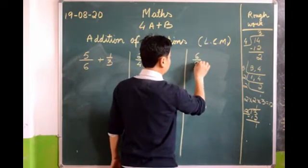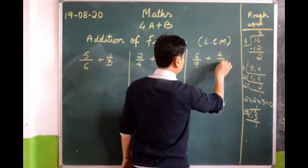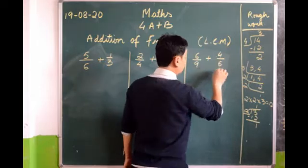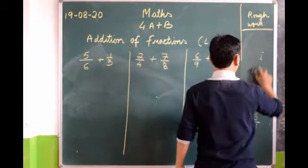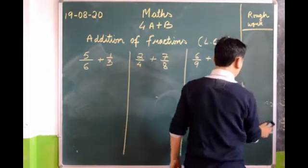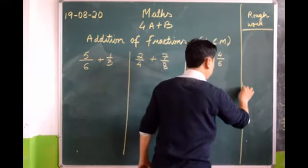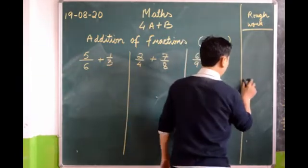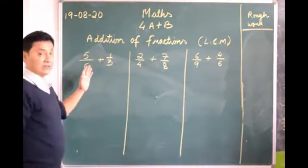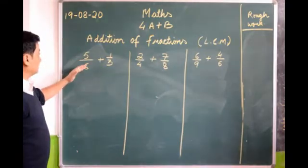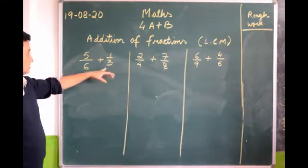So I have written three sums. Are we ready? Three different sums — and this is rough work, remember to make rough work in your exercise book. So we have to add 5/6 plus 1/3. Whenever you see unlike fractions, you cannot just add 5 plus 1 over 6 plus 3 — no, that cannot be done that way. These are two different fractions and they need a common denominator.